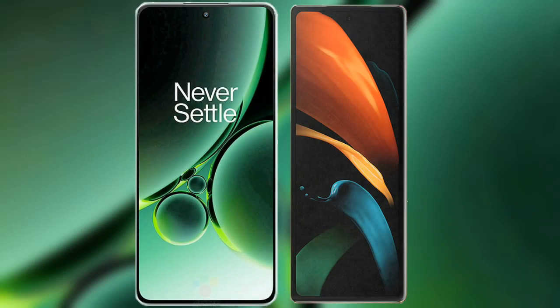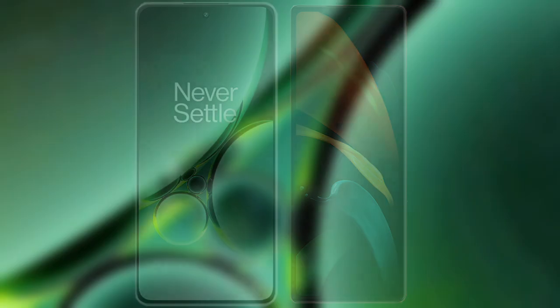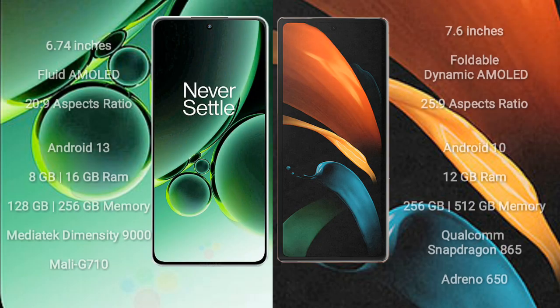I will compare the new OnePlus Nord 3 with the Samsung Galaxy Z Fold 2. OnePlus Nord 3 comes with a 6.74-inch flat AMOLED display and a 20:9 aspect ratio. Samsung Galaxy Z Fold 2 comes with a 7.6-inch foldable dynamic AMOLED display and a 25:9 aspect ratio.